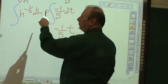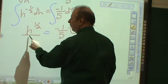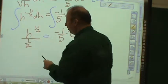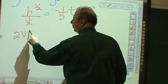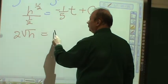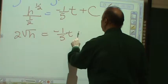h to the negative 1/2 power becomes h to the 1/2 power over 1/2. And, of course, this becomes 2√h. Because h to the 1/2 power is √h. 2√h equals negative 1/5 t plus c.